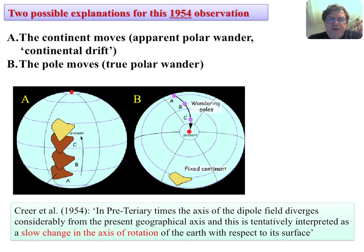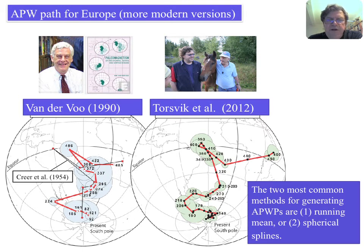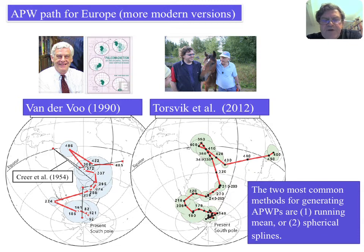That observation was from just one continent, but in 1956 Runcorn had polar wander paths for two continents — Europe in orange and North America in yellow — and they differed. This was the first solid evidence for continental drift. He no longer argued for true polar wander but concluded this was continental drift. The difference between the two curves was the modern opening of the North Atlantic, which turned out to be about 38 degrees. If you close Europe and North America for the modern opening, they are superimposed — the first geophysical evidence for continental drift, already in 1956.